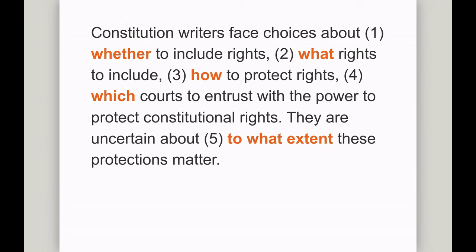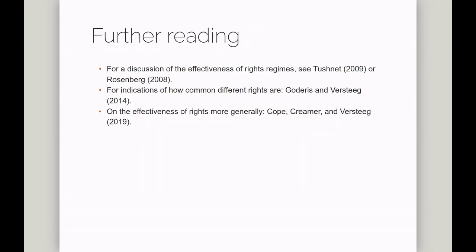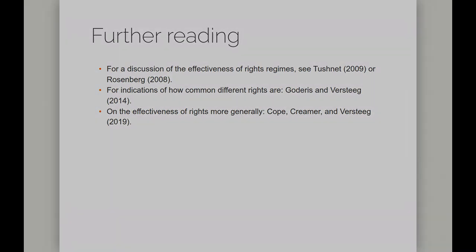In conclusion, I've argued that there are five big questions that constitution writers and social scientists face: whether to include rights, what rights to include, how to protect rights, and which courts to entrust with the power to protect rights. There is some evidence that all of this matters, but for some rights rather than all rights. If you're interested in further reading on this topic, I've listed a couple of articles which might help you learn more. Thank you.